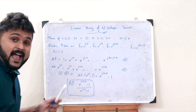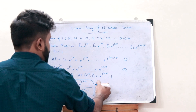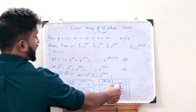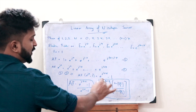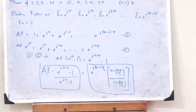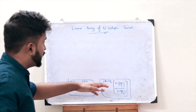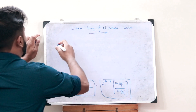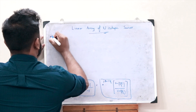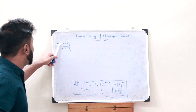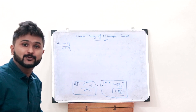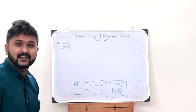Rewriting, the antenna factor becomes AF = e^(j(n−1)ψ/2) × sin(nψ/2) / sin(ψ/2). Therefore, the normalized array factor is: AF_normalized = sin(nψ/2) / (n × sin(ψ/2)). That is the normalized array factor.